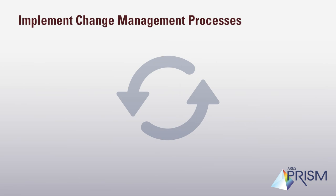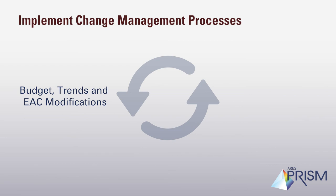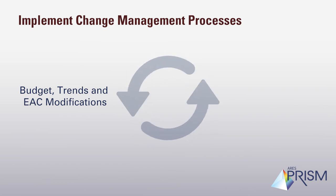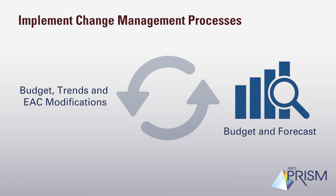Implement Change Management Processes: Project changes can be budget changes, trends, or EAC modifications. With Prism, you can implement change management processes to maintain control of scope and cost. Once the changes get entered into the Prism Change Module, they can easily be calculated in the Prism Cost Module to hit the budget and forecast.